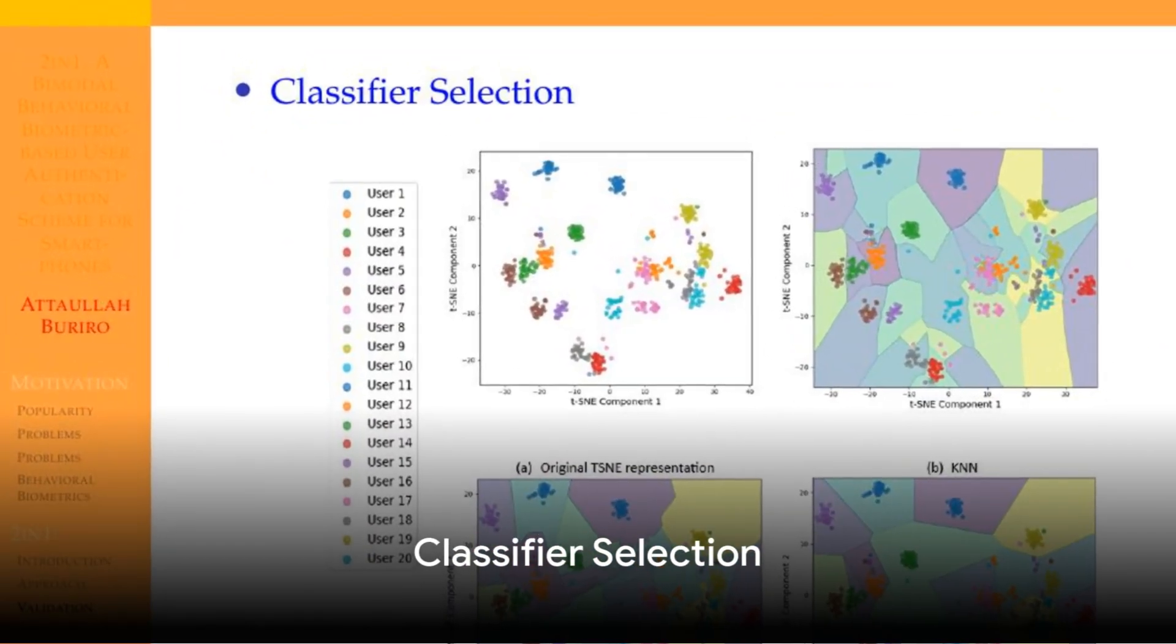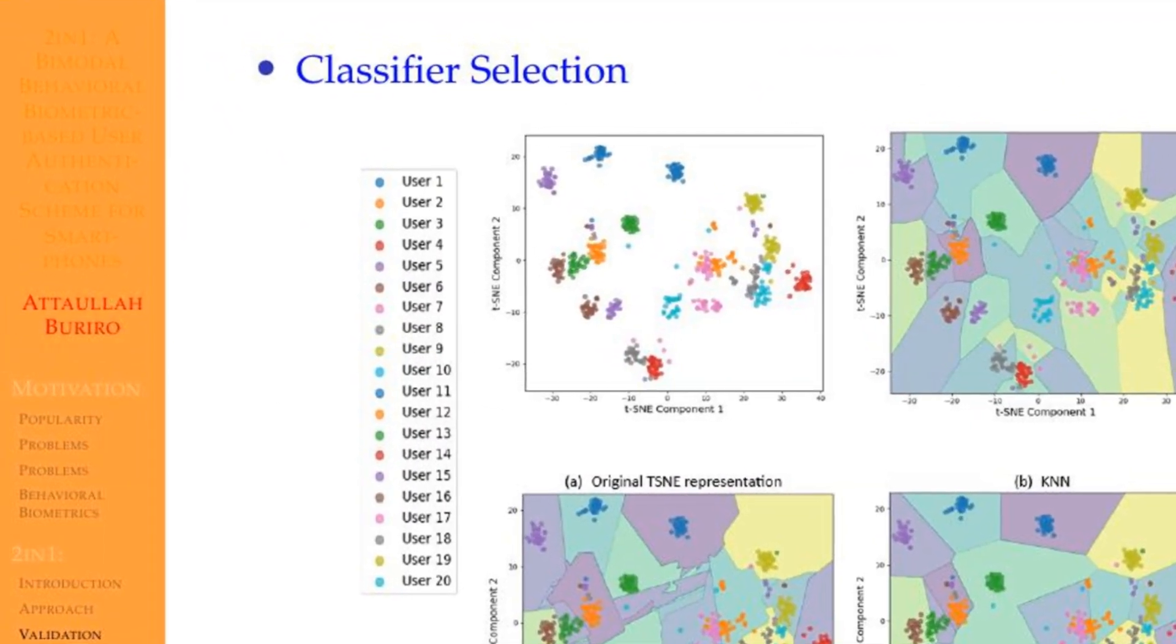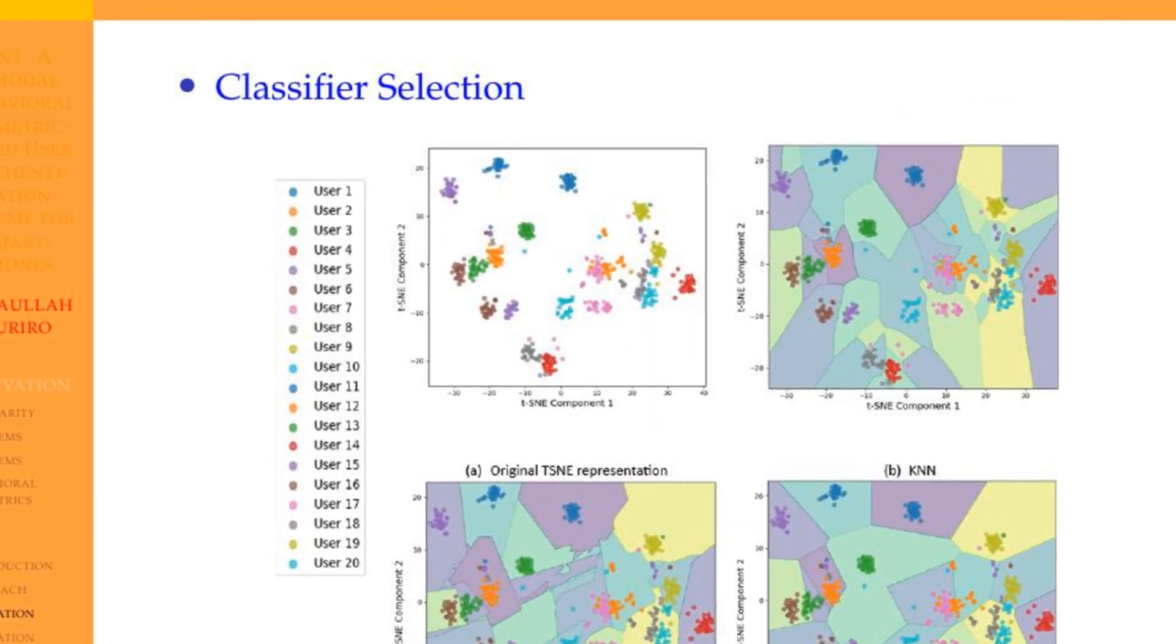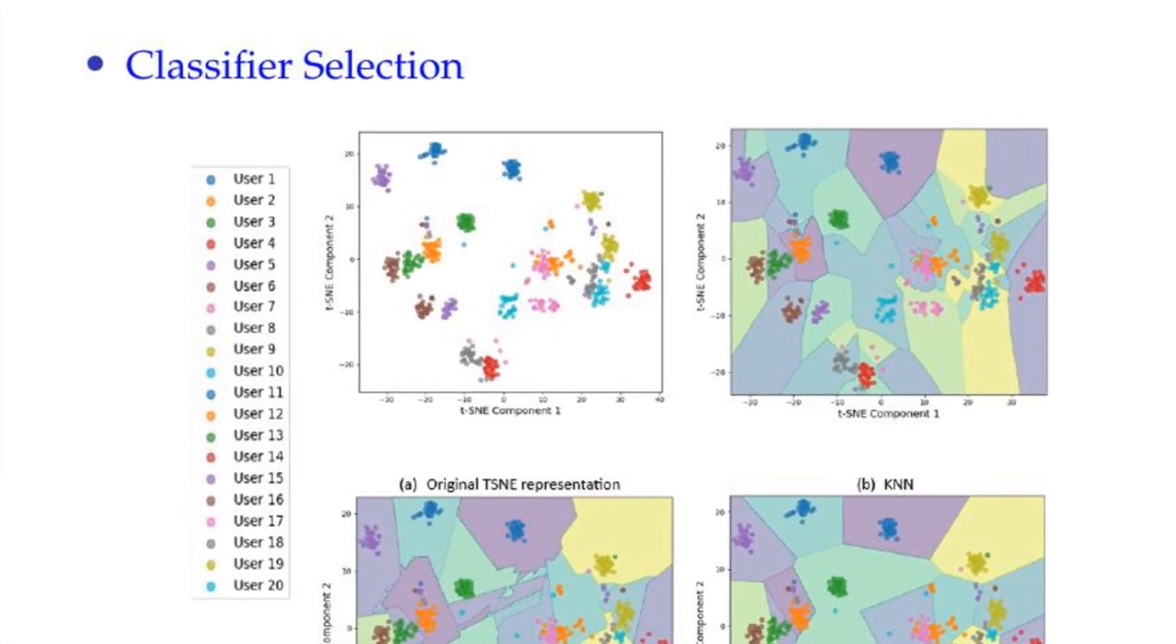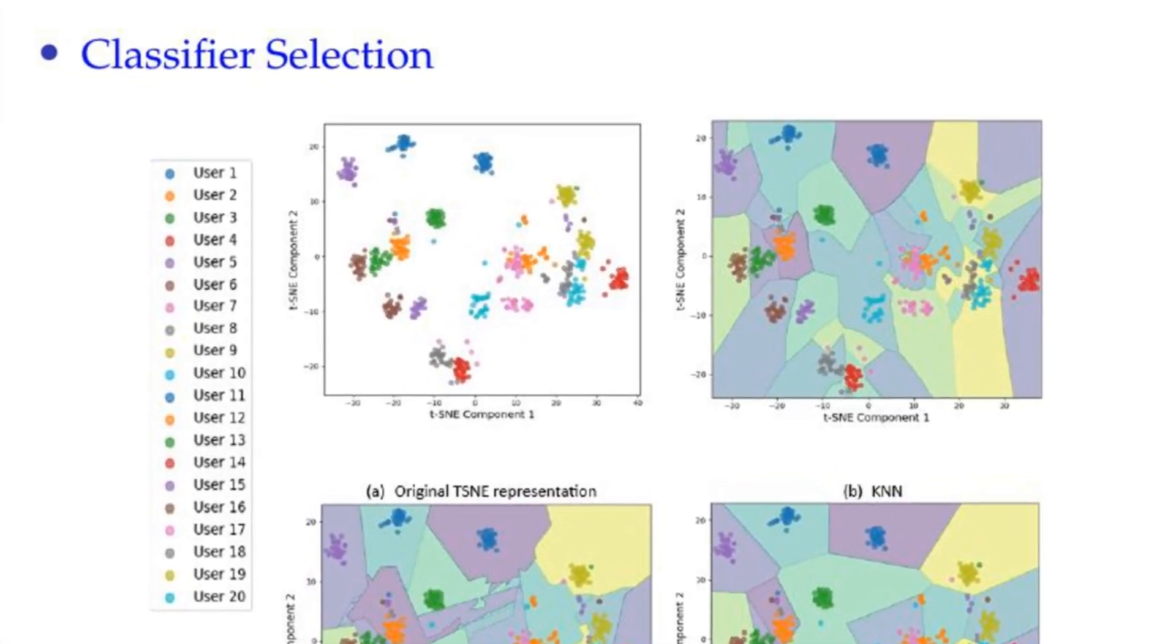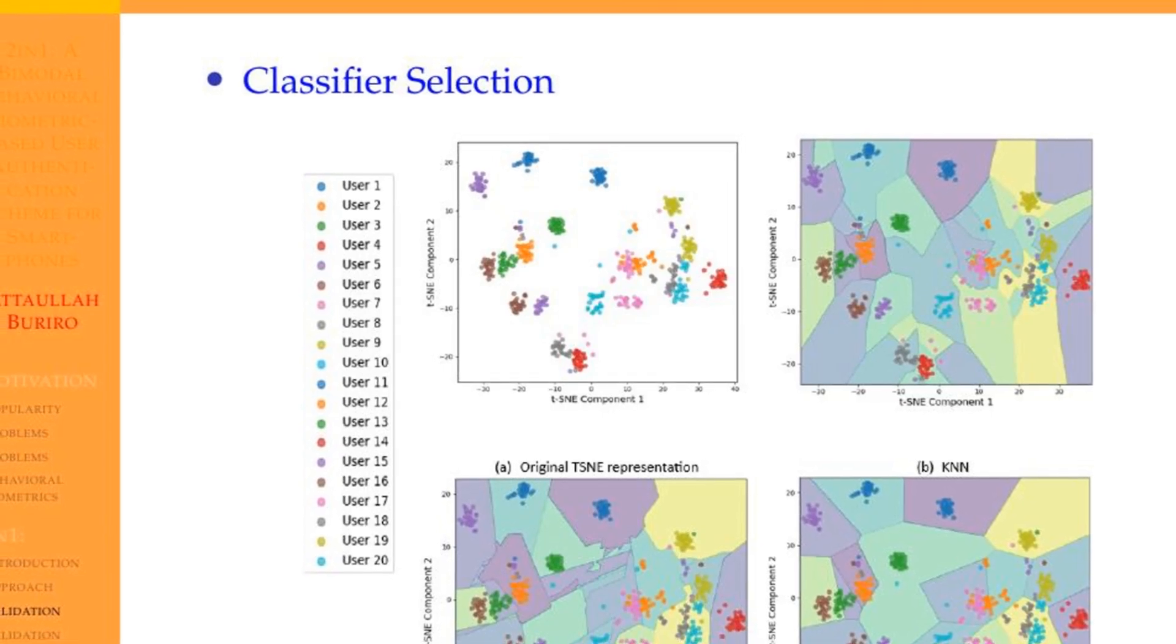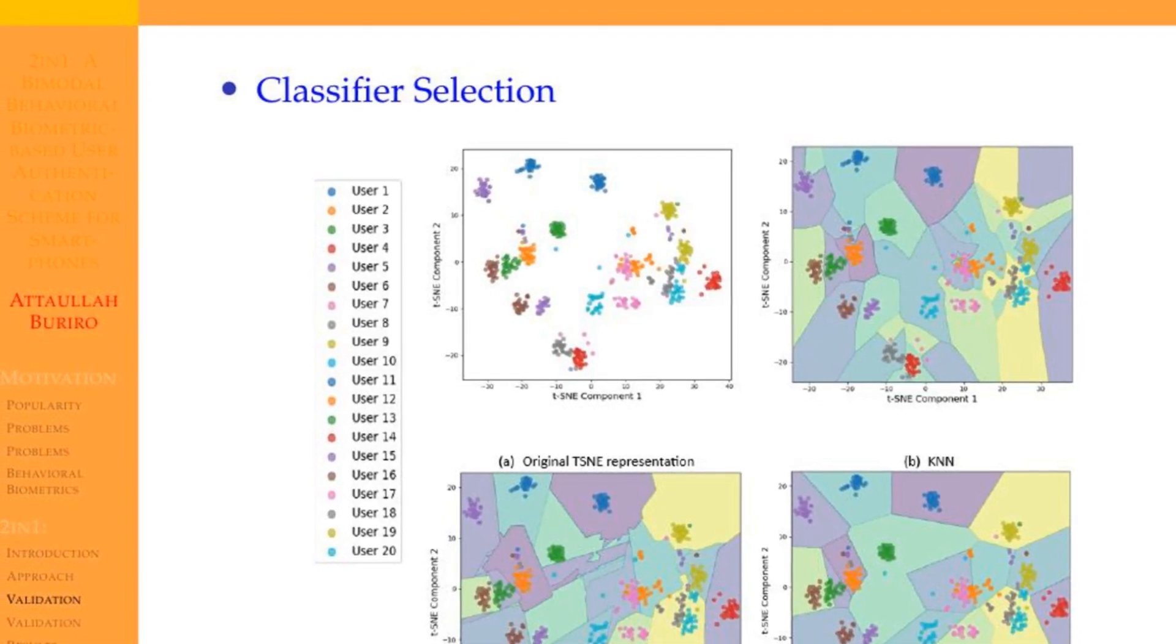Classifier selection depends on multiple factors, such as size of the data and the target application. In the original TSN representation, each user's data points are scattered across the feature space. KNN identifies the nearest neighbors for each data point. The classification boundary is determined by the majority class among the K nearest neighbors. KNN adapts to the local distribution of data points.